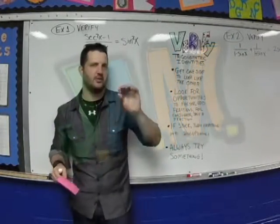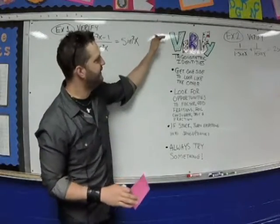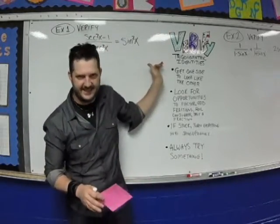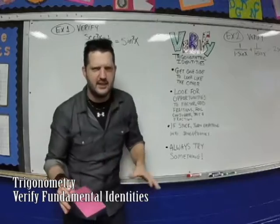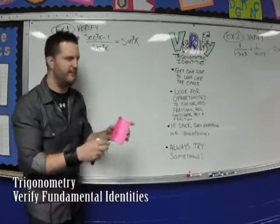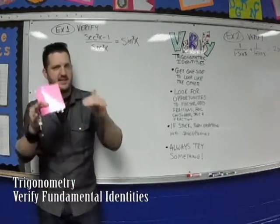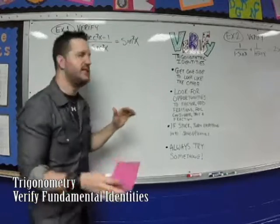This is the first example from chapter 2.2, and this new concept we're going to talk about is called verifying trigonometric identities. What that really means is that you're going to be given an equation. Last time in chapter 2.1, we were just given a trig expression and you had to simplify it a little bit. This is different. This is an actual equation, so you have a left side and a right side.